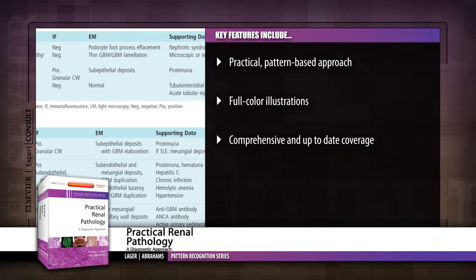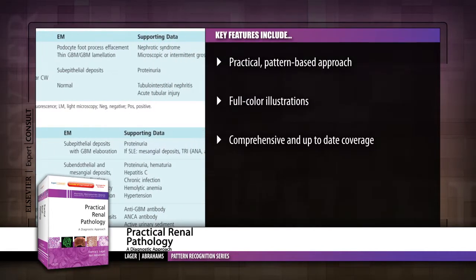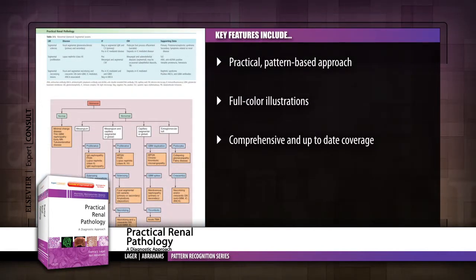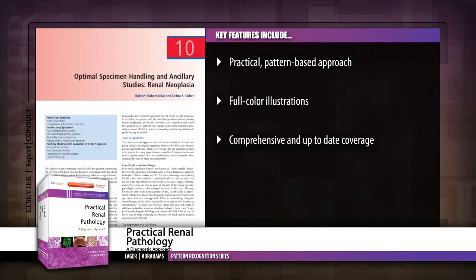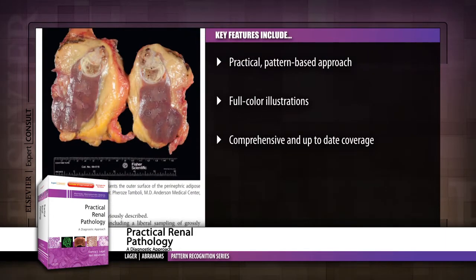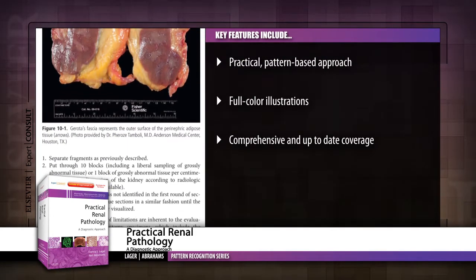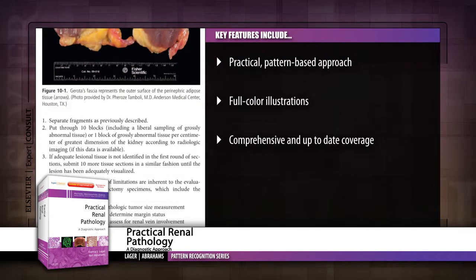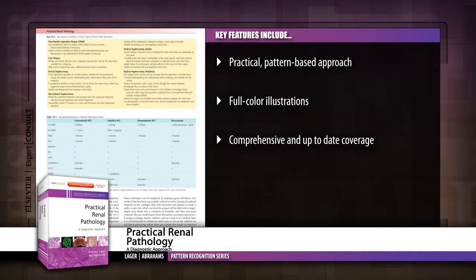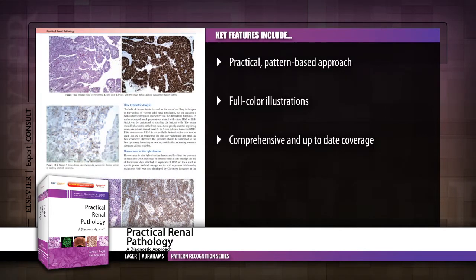Compare specimens to commonly seen patterns, categorize them accordingly, and turn directly to in-depth diagnostic guidance using the unique pattern-based visual index at the beginning of the book. Assess key pathologic and clinical aspects of both neoplastic and non-neoplastic conditions with over 750 high-quality, full-color images.